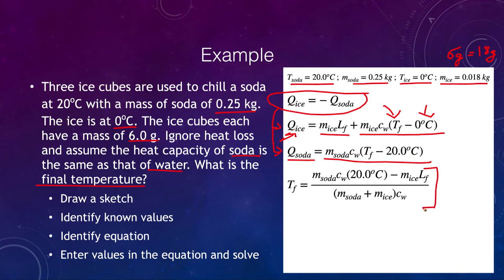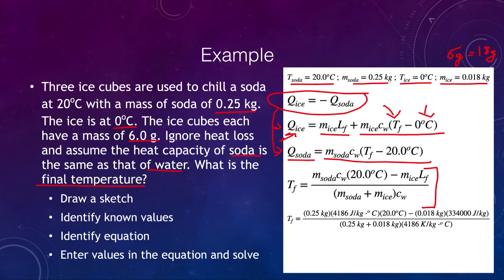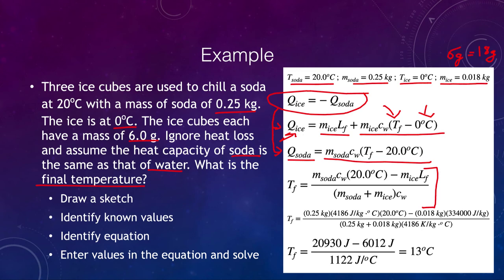Putting all the known numbers together and calculating, we find that the final temperature of the ice and soda once the ice is melted is 13 degrees Celsius. The temperature decreased from 20 degrees Celsius to 13 degrees Celsius. When phase changes are involved, we have to do the problem in parts, since different amounts of heat are needed to melt the ice versus to raise the temperature of that water to the final temperature.